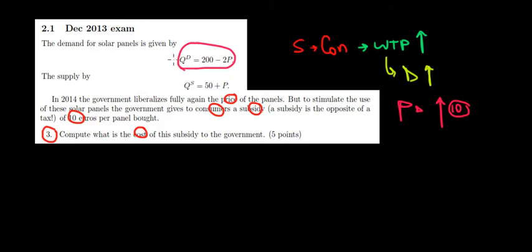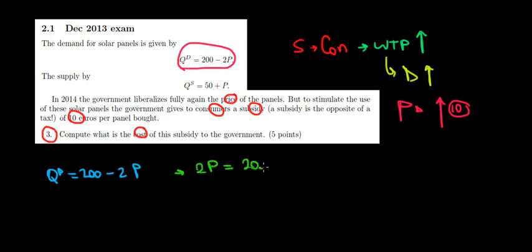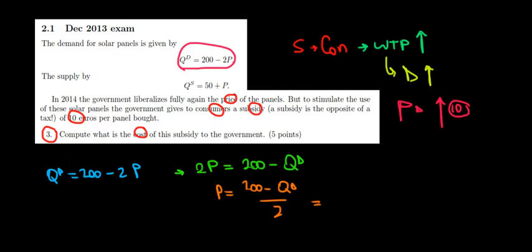If quantity demanded equals 200 minus 2 times the price, and we want the price of the demand side, we take the price on one side and quantity on the other: 2P = 200 minus quantity demanded, so P = (200 minus Qd) divided by 2, which works out to 100 minus one-half times the quantity demanded. That's the regular demand price function.